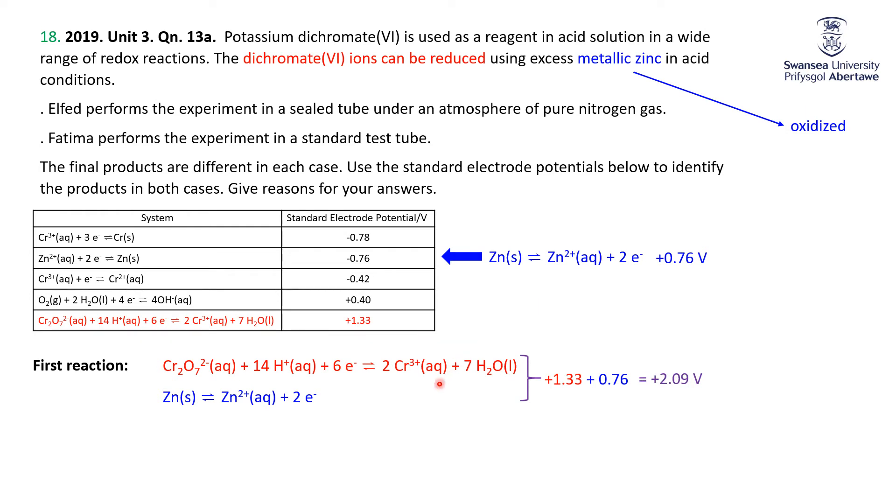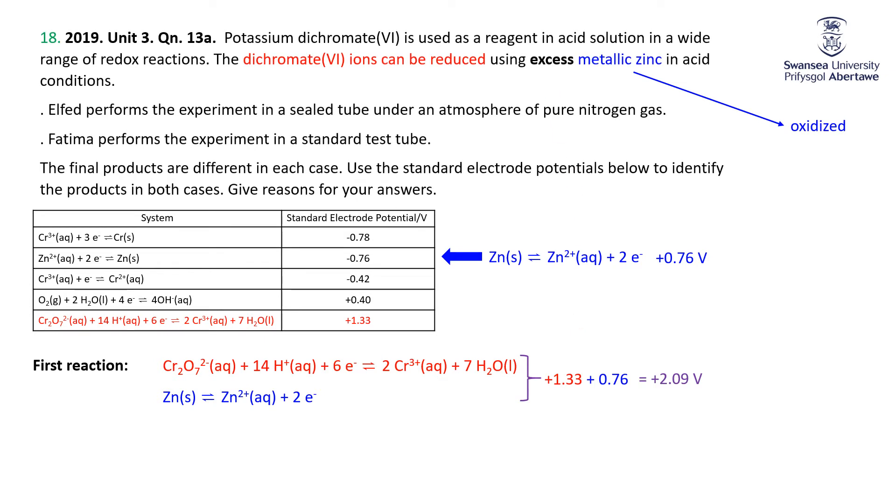So we're making Cr3+ and zinc 2+ with potential of plus 2.09 volts. Very, very large potential as potentials go, very spontaneous reaction or very feasible reaction if you want to use that silly word. Now, why is the question any more complicated than that? Well, because we have this word up here: excess. We've got excess metallic zinc around.